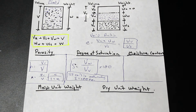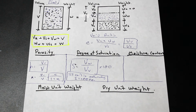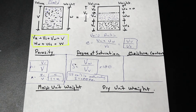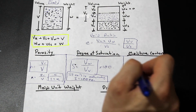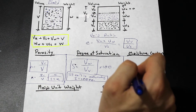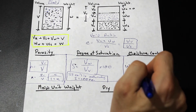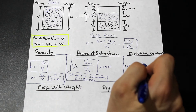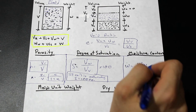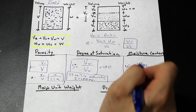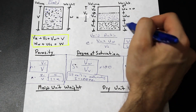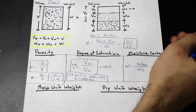Let's take a look at moisture content. Moisture content is a little bit different — this is a ratio of weights, whereas degree of saturation was a ratio of volumes. Moisture content, denoted by w, is the weight of water divided by the weight of solids, times 100, expressed as a percentage.